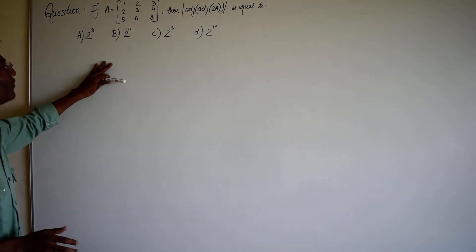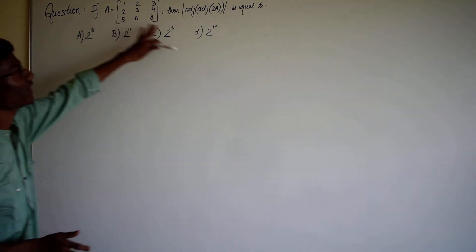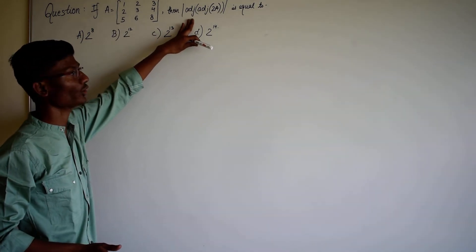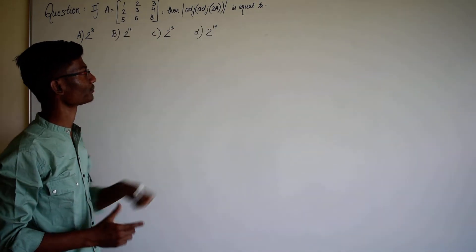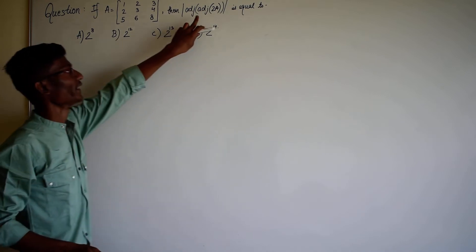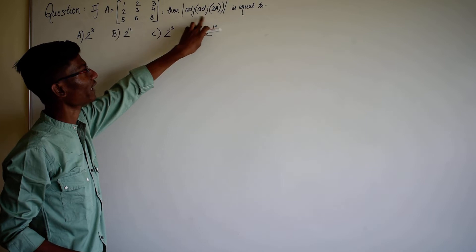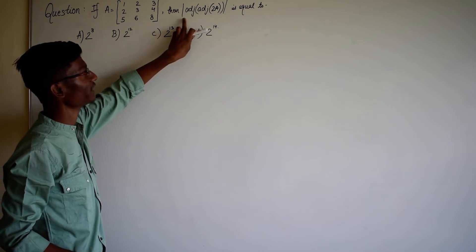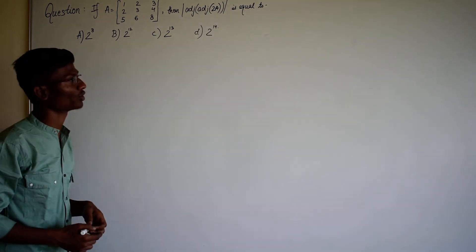In this question we have given a matrix A and we have to find the value of determinant of adjoint of adjoint of 2A. We could do this by first finding the adjoint of 2A, again finding its adjoint, and then taking its determinant. But that is too long a process.